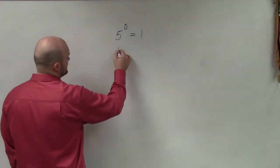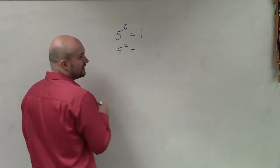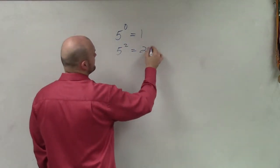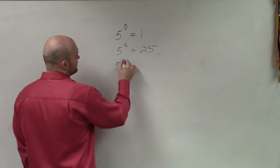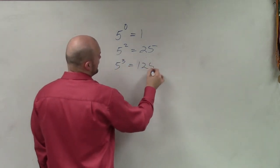And if you guys look at this, 5 squared is going to be 25, and 5 cubed is 125.